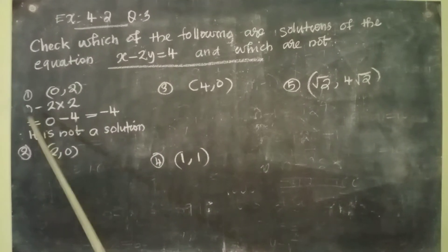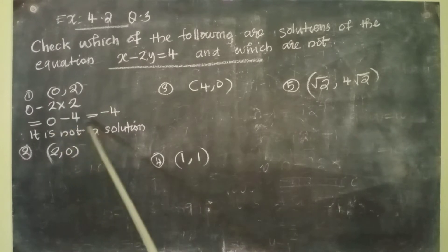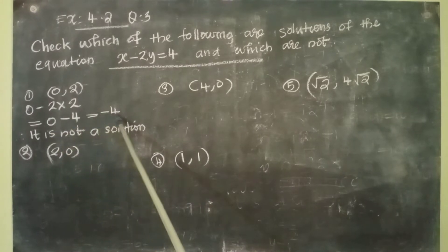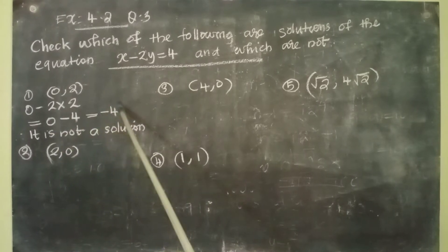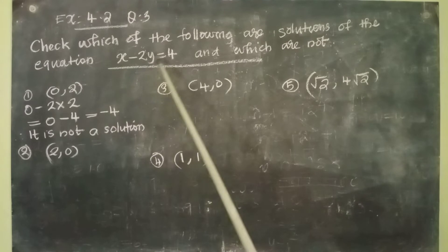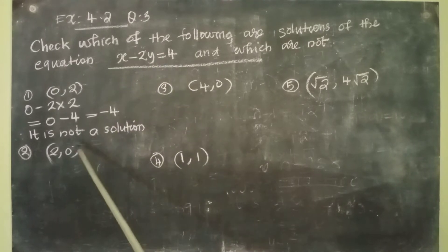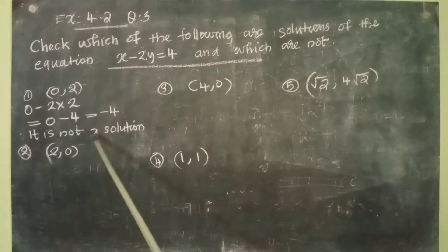We get 0 minus 2 into 2, that is equal to 0 minus 4, that is equal to minus 4. The answer here is minus 4, but the right-hand side is 4, so we can conclude it is not a solution.